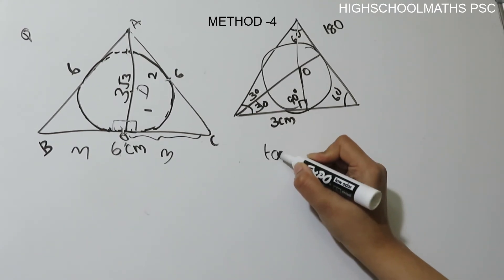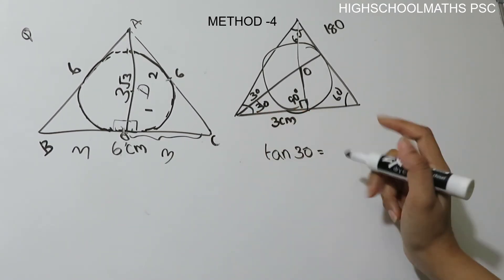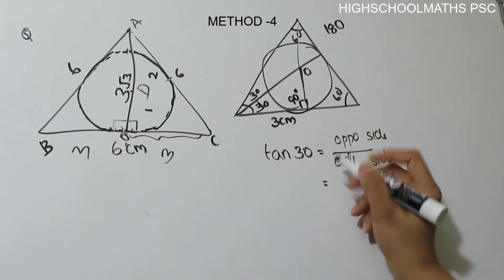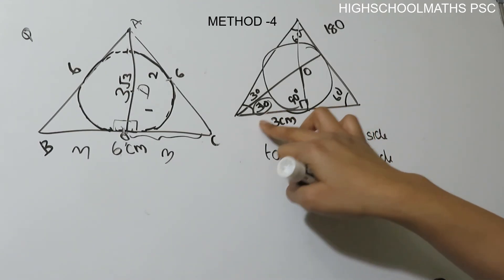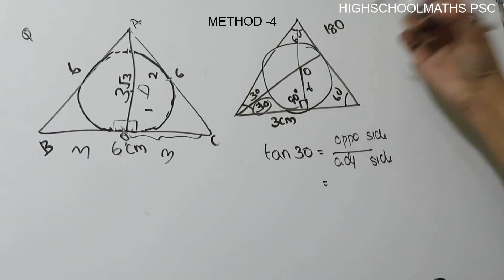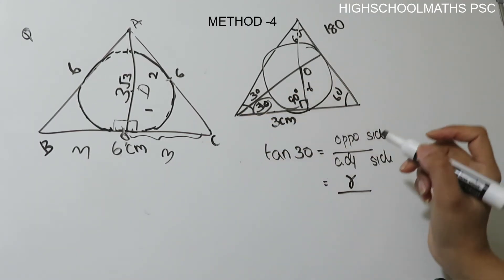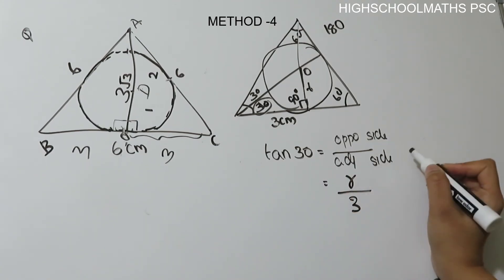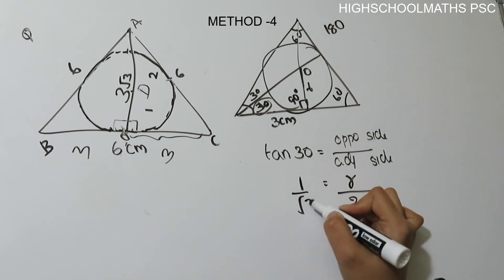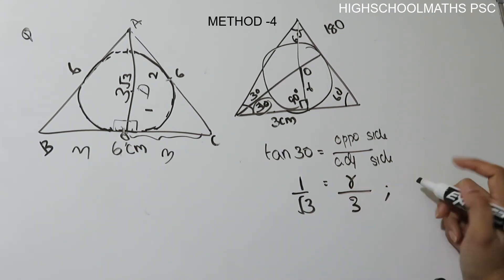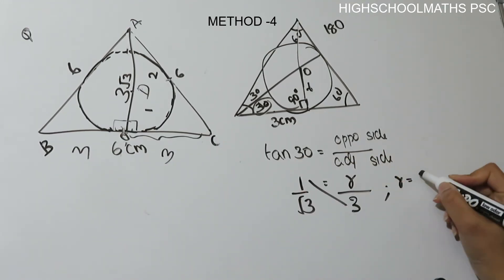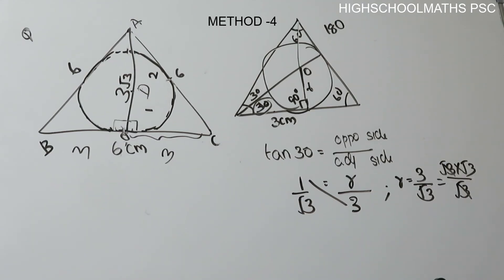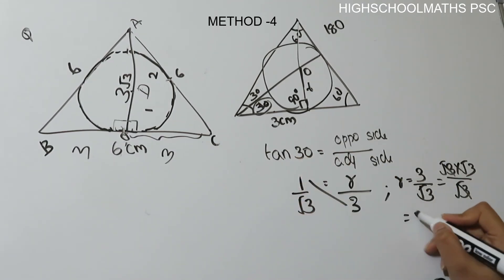Now we have a trigonometric value. What is tan of an angle? The tan of an angle is the opposite side by the adjacent side. If you consider tan(30°), the opposite side is the radius r and the adjacent side is 3 cm. So tan(30°) = r/3. R is equal to 3 × tan(30°) = 3 by √3, and rationalizing gives √3.